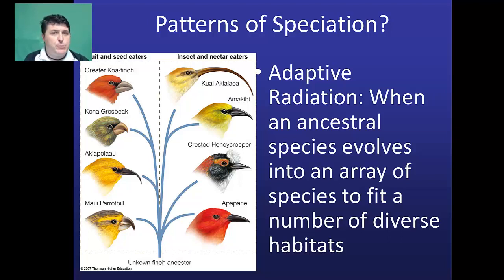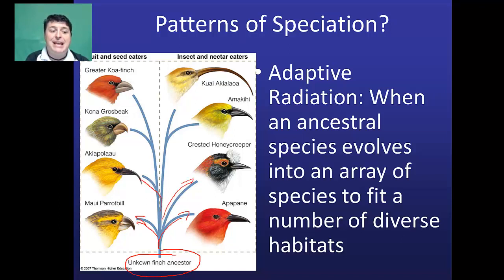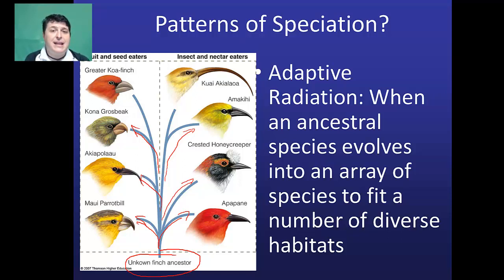When we explore speciation under certain conditions, we see particular patterns. One such pattern is adaptive radiation, which occurs when an ancestral species evolves into an array of species to fit new habitats as they radiate or move to new environments. Typically we see this when a species moves from the mainland to new island habitats, like in Hawaii with the honeycreepers, or the finches and Galápagos tortoises in the Galápagos.